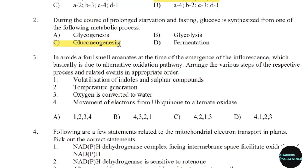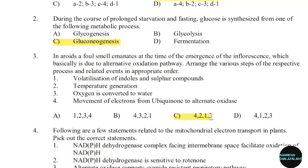3rd question: In aroids, a foul smell emanates at the time of the emergence of the inflorescence, which is basically due to the alternative oxidation pathway. Arrange the various steps of the respective process and related events in appropriate order. Correct answer: Option C — 4, 2, 3, 1.